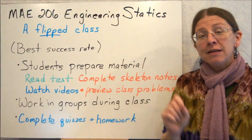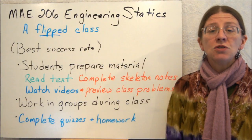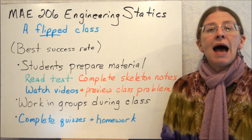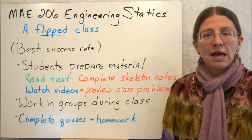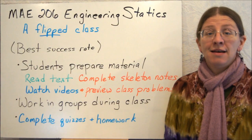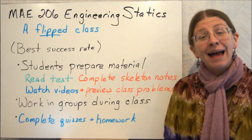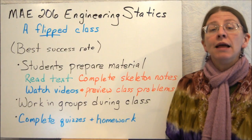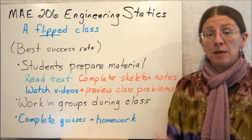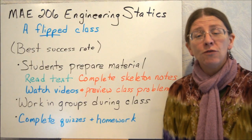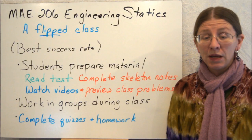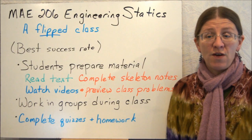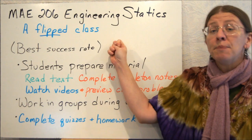I've flipped this class because it gives students the best success rate. I've been researching for the last many years how best to teach Statics to sophomores and others at NC State — that's my area of research. I'm trying to figure out how to get you to learn this material as easily and successfully as possible, and the best way I've found is this flipped class. I see course averages that are 4 to 5 points higher, and drop, withdrawal, and fail rates that are as much as 5 or 10 percent lower. So it really is a better success rate.